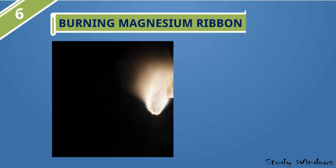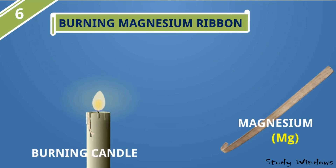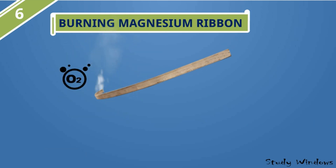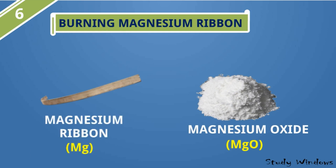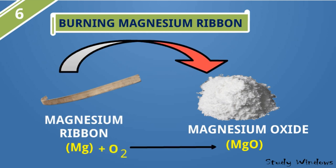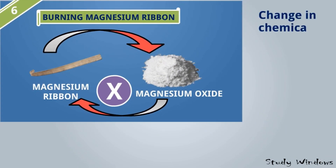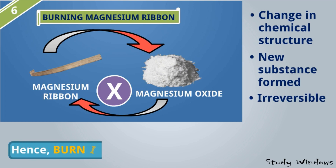Burning magnesium ribbon. This is the magnesium ribbon and we will take a burning candle. We will bring the magnesium ribbon into the flame of the candle, and we will see that the magnesium ribbon burns with the help of the oxygen present in the air. We get a white powdery substance called magnesium oxide (MgO). So this magnesium ribbon, with the help of oxygen, changes into magnesium oxide. Magnesium oxide cannot be made back into the ribbon. There is a change in chemical structure, a new substance is formed, it is irreversible, hence burning magnesium ribbon is a chemical change.